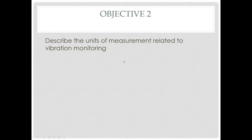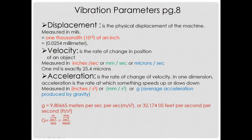Moving into objective two: describing the units of measurements related to vibration monitoring. Displacement — the physical displacement of the machine — here in Canada is usually still measured in mils, though we can also do it in millimeters. Velocity, the rate of change, is measured in inches per second. Acceleration is inches per second squared. So the typical units are thousandths of an inch, inches per second for velocity, inches per second squared for acceleration, and then our good old friend gravity at 9.81.